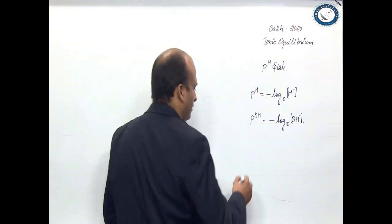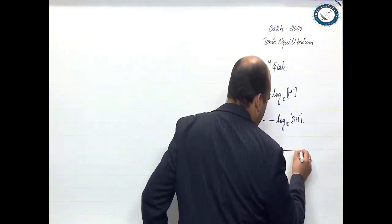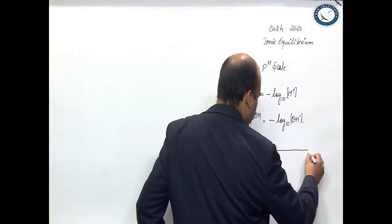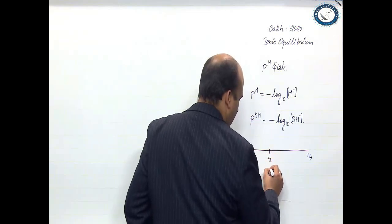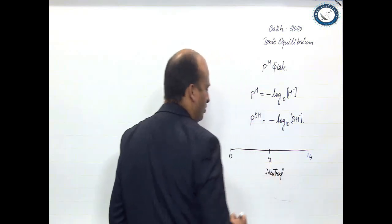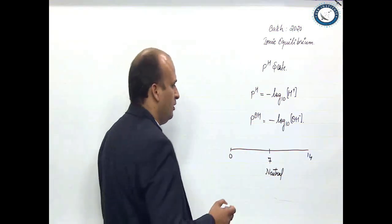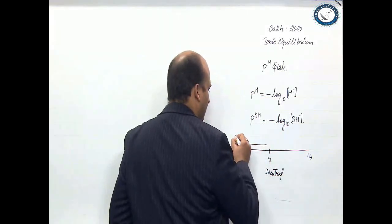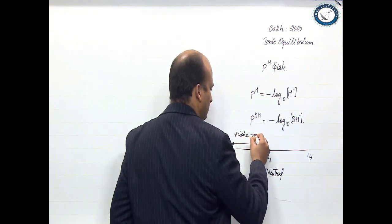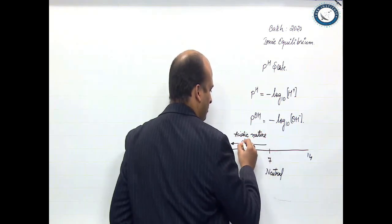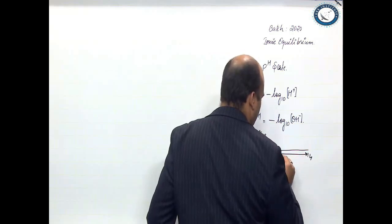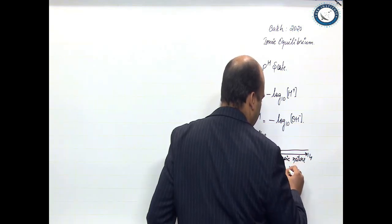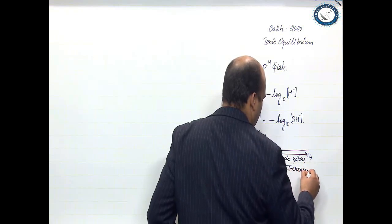The pH scale varies from 0 to 14. A pH of 7 means that the solution is neutral, meaning equal acidic and basic character. When you move from 7 towards 0, the acidic nature increases. When you move from 7 to 14, the basic nature increases.